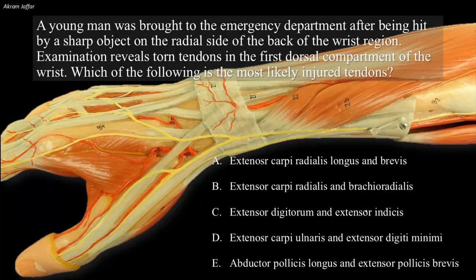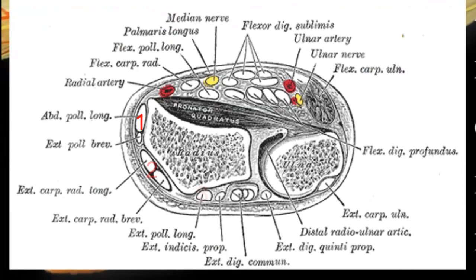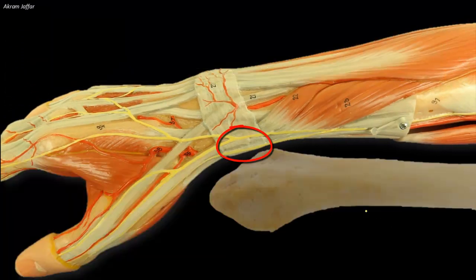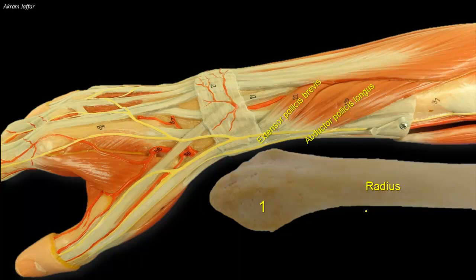It holds the tendons of extensor muscles in place. From the deep surface of the retinaculum, fibrous septa pass into the bones of the forearm, dividing the extensor tunnel into six compartments. The lateral one covers the lateral surface of the distal end of the radius, allowing passage of abductor pollicis longus and extensor pollicis brevis — the two muscles forming the anterior boundary of the anatomical snuffbox.